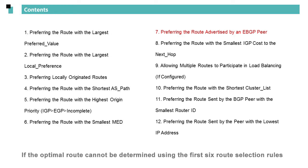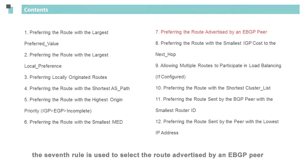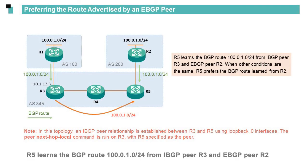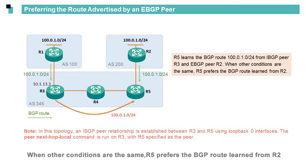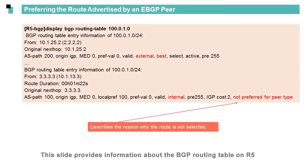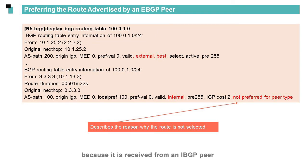If the optimal route cannot be determined using the first 6 route selection rules, the 7th rule is used to select the route advertised by an EBGP peer. In this topology, R5 learns the BGP route 100.0.1.0/24 from IBGP peer R3 and EBGP peer R2. When other conditions are the same, R5 prefers the BGP route learned from R2. We can see that the route received from R3 is not preferred because it is received from an IBGP peer.